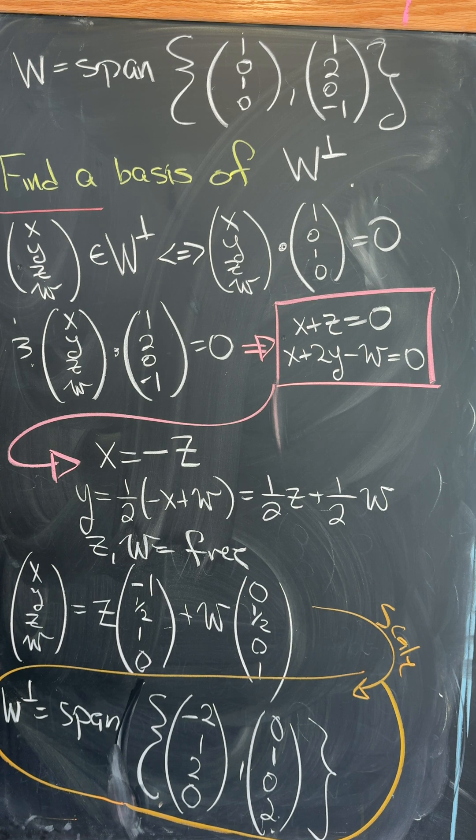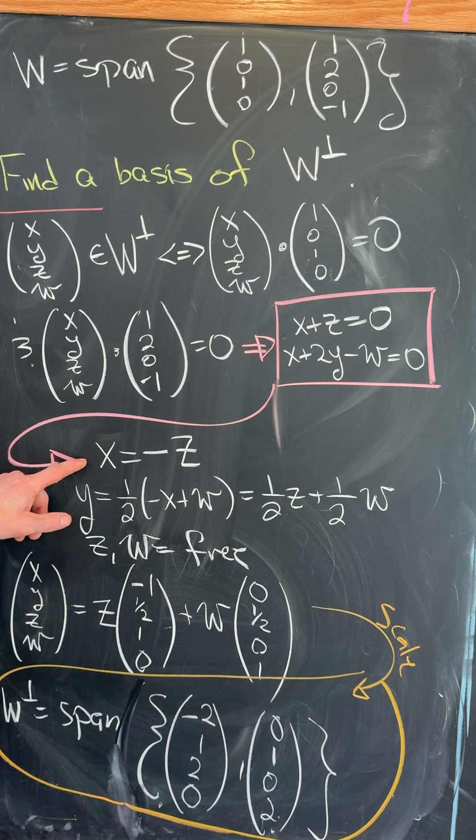You could put this into a matrix and find the null space, but it's easier to move some symbols around, giving us X = -Z and Y = (1/2)Z + (1/2)W, where Z and W are free.